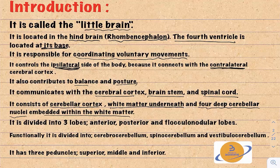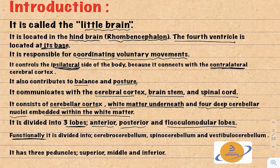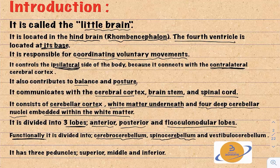The cerebellum is divided into three lobes: the anterior lobe, posterior lobe, and flocculonodular lobe. More clinically important is the functional division, which consists of the cerebrocerebellum, the spinocerebellum, and the vestibulocerebellum. The cerebellum also has three peduncles: the superior, middle, and inferior cerebellar peduncles.